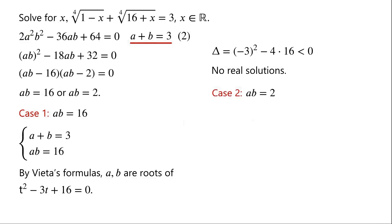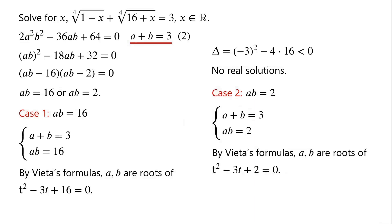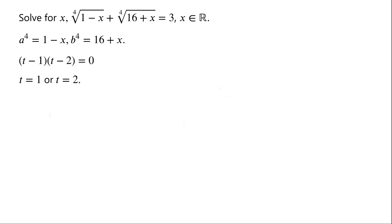Case 2: ab equals 2. We have the system a plus b equals 3 and ab equals 2. By Vieta's formulas, a and b are roots of t² minus 3t plus 2 equals 0. The left side factors as (t minus 1)(t minus 2) equals 0. So either t equals 1 or t equals 2. That is, a equals 1 and b equals 2, or a equals 2 and b equals 1.